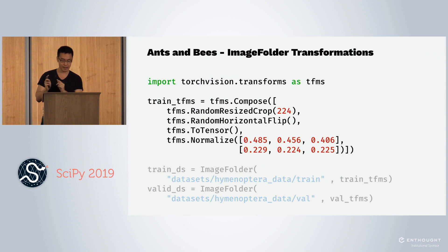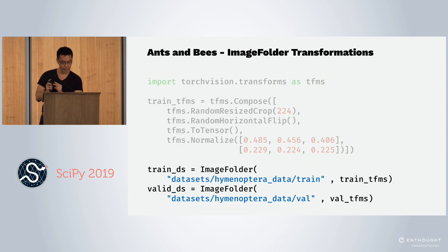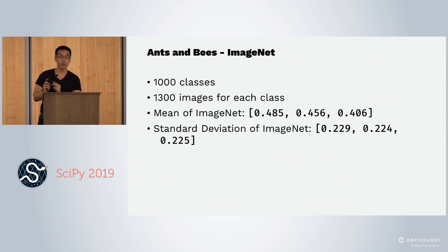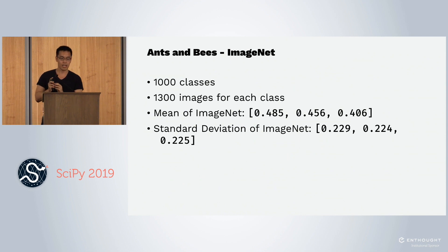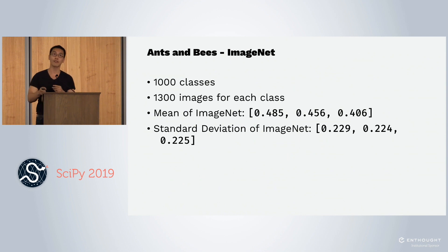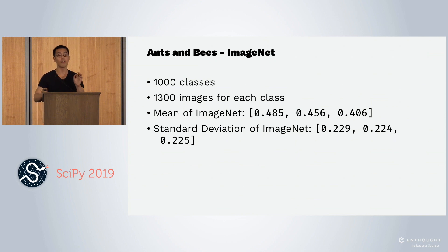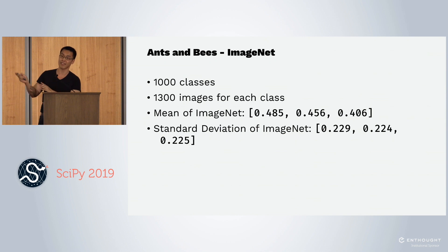We normalize the data because we're going to use a pre-trained neural net. To use a pre-trained neural net, we have to normalize our data to the mean and standard deviation of ImageNet, because our pre-trained neural network was trained on that. Very standard neural network stuff.